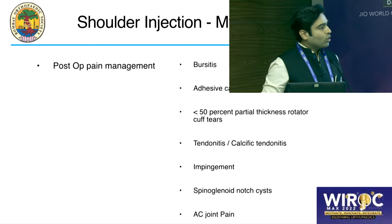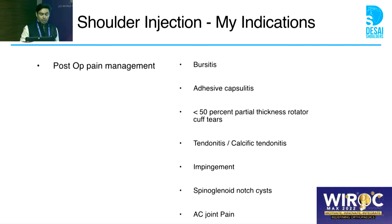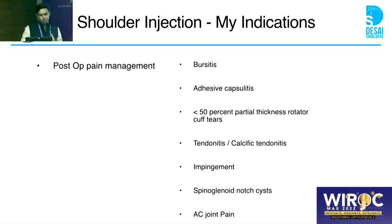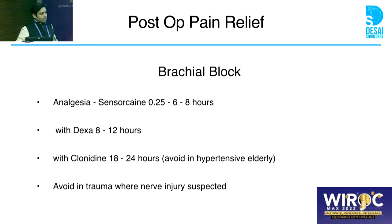Indications for shoulder injections are mainly post-op pain management. Rotator cuff repairs can be very painful post-operatively, and no matter how good your surgery is, if the patient wakes up in pain, that's not ideal. Outpatient conditions requiring injection include bursitis, adhesive capsulitis, partial tears less than 50% thickness, tendinitis or calcific tendinitis, impingement syndrome, spinoglenoid notch cysts, and AC joint pain. I generally avoid giving injections in full-thickness tears or high-grade partial-thickness tears.